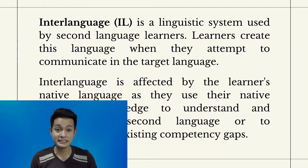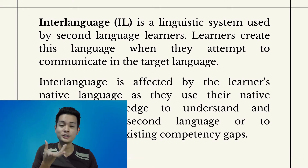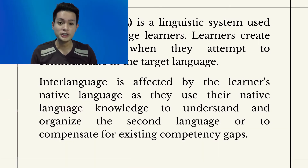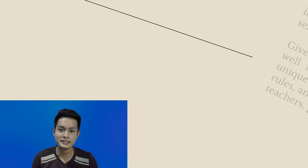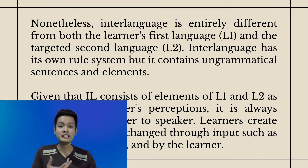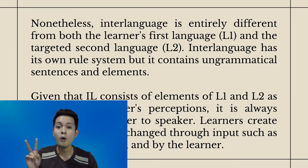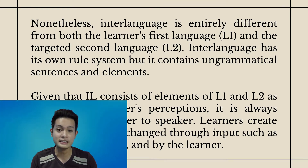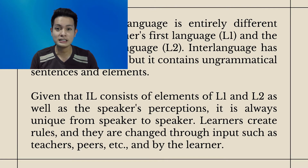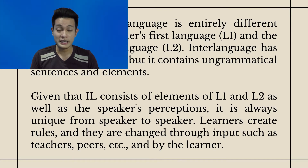Interlanguage is a linguistic system used by second language learners. Learners create this language when they attempt to communicate in the target language. It is affected by the learner's native language as they use their native language knowledge to understand and organize the second language, or to compensate for existing competency gaps. Nonetheless, interlanguage is entirely different from both the learner's first language (L1) and the targeted second language (L2). Interlanguage has its own rule system, but it contains ungrammatical sentences and elements.